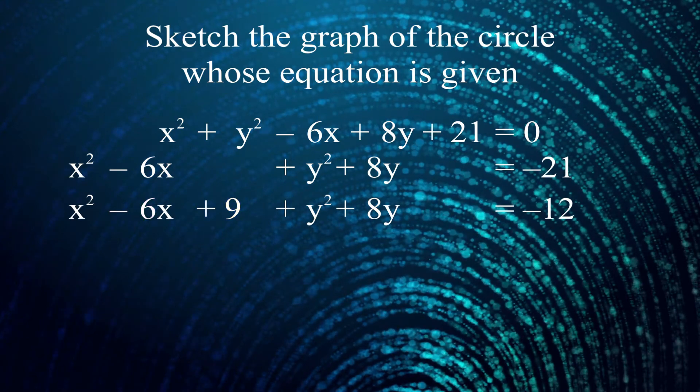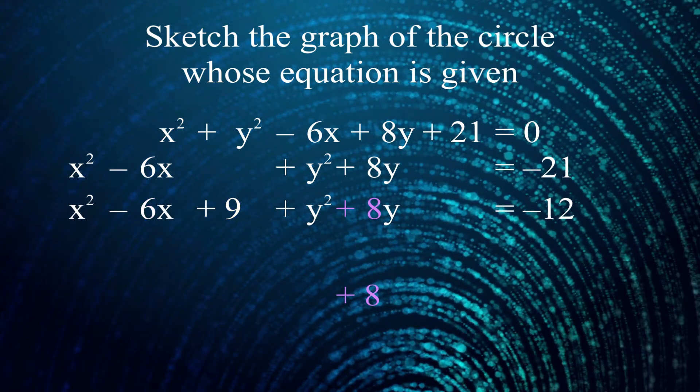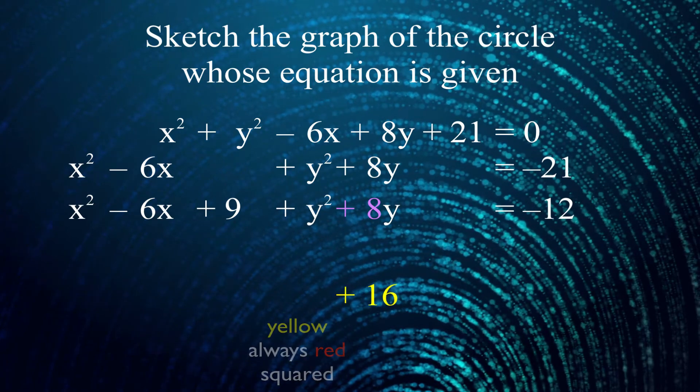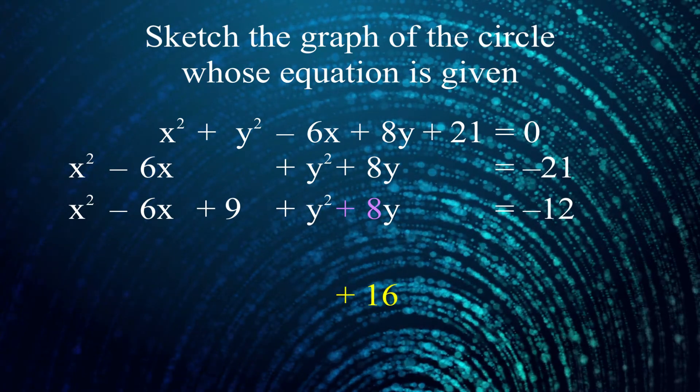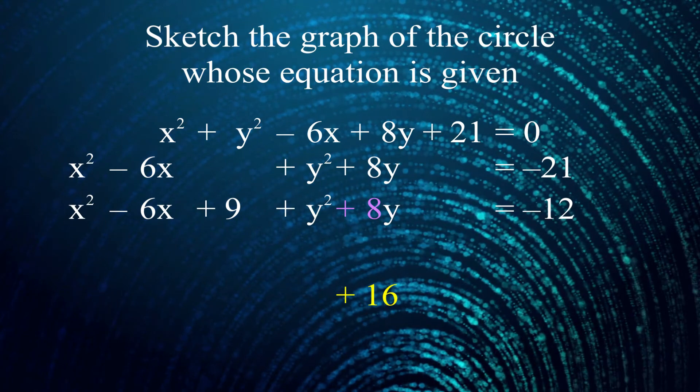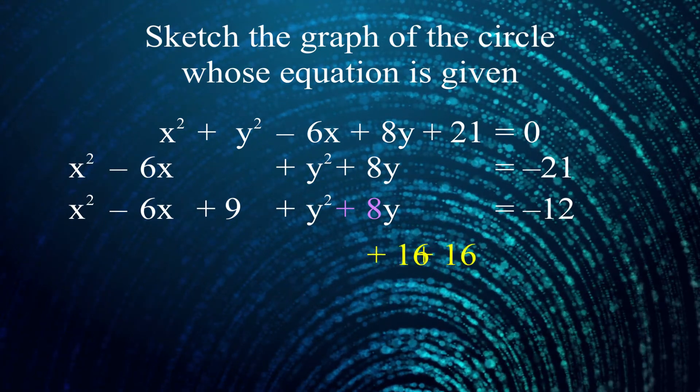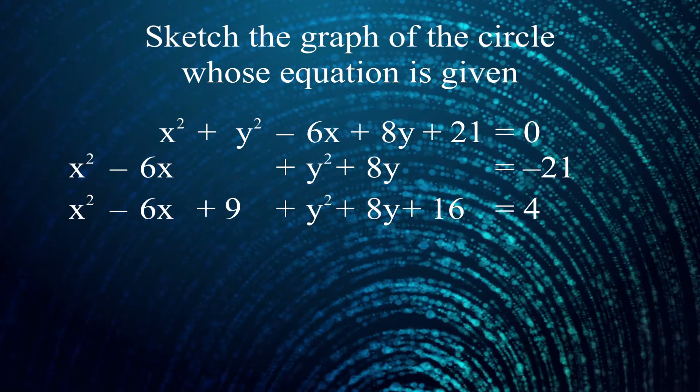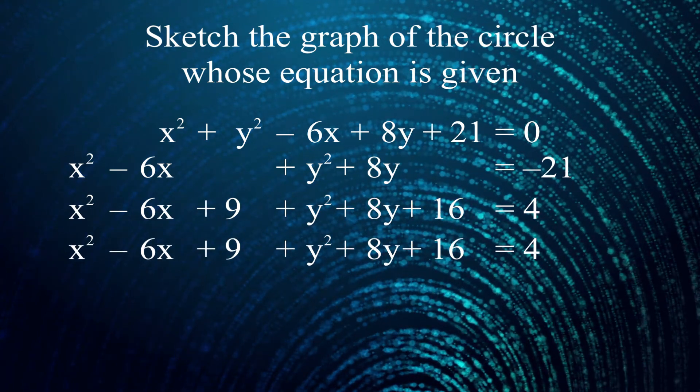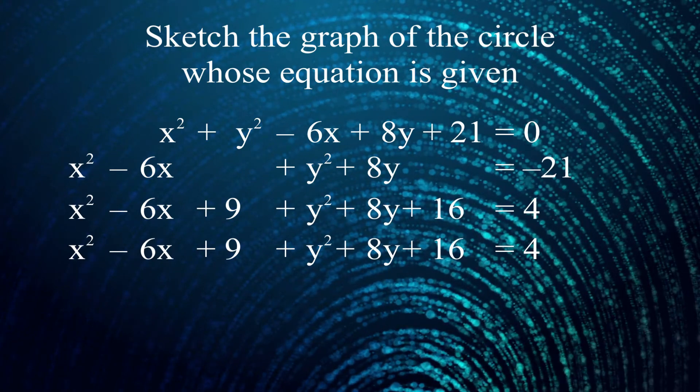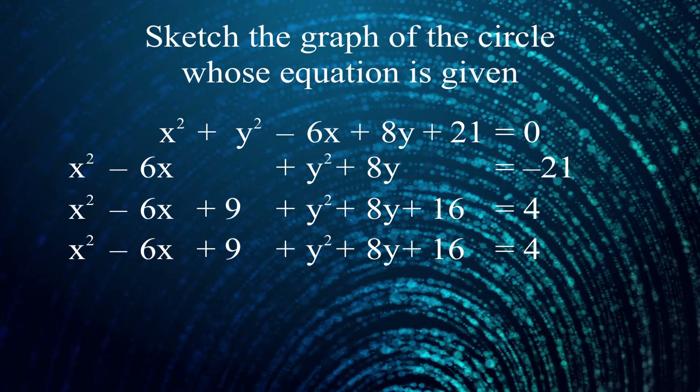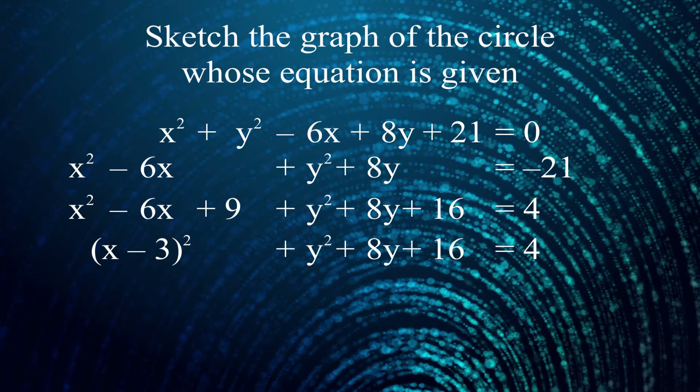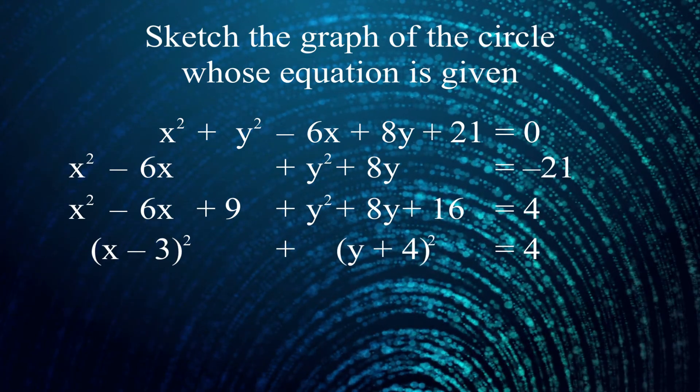Same idea with the y's, except now the purple number is positive 8. So the red number is positive 4, and the yellow number is positive 16. I got y squared plus 8y. I sure wish I had y squared plus 8y plus 16, so I'm going to add 16 to both sides of the equation. I now have a perfect square with the x's and a perfect square with the y's. So recognizing that my red numbers would have been negative 3 and positive 4, respectively, I can change x squared minus 6x plus 9 into x minus 3 squared, and y squared plus 8y plus 16 into y plus 4 squared.